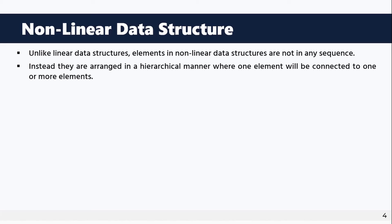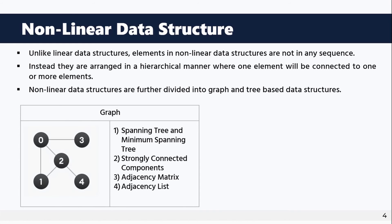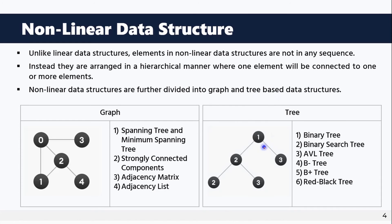Non-linear data structures are further divided into graph-based and tree-based data structures. Graph-based structures include spanning tree, minimum spanning tree, strongly connected components, adjacency matrix, and adjacency list. For example, nodes 0, 1, 2, 3, 4 can be connected in a graph.